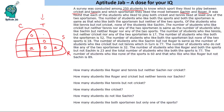The number of students who like cricket but neither tennis nor any of the two sportsmen — that is, exclusively cricket — equals the number who like Sachin but neither Roger nor any of the two sports — that is, exclusively Sachin. So only cricket equals only Sachin, and we call this value 'b'.